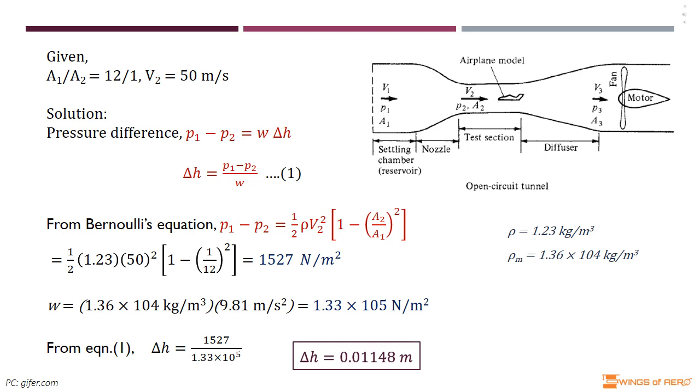The question is: what is the height difference in a U-tube mercury manometer with one side connected to the nozzle inlet and the other to the test section? One side of the manometer is connected to a pressure tap in the settling chamber where the pressure is p₁, and the other side is connected to a pressure tap in the test section where the pressure is p₂.